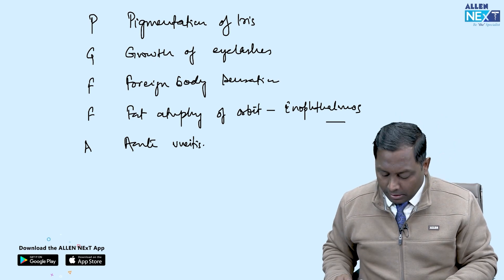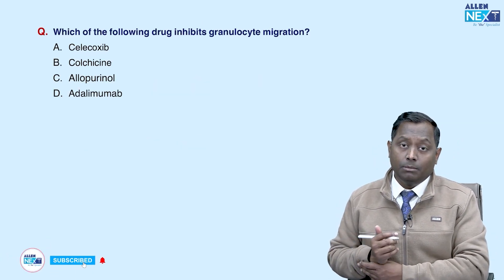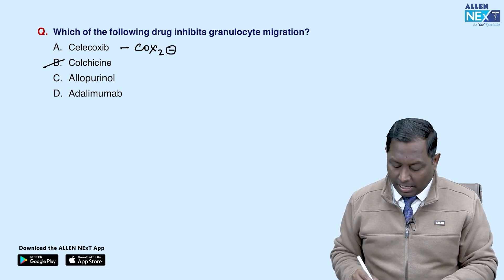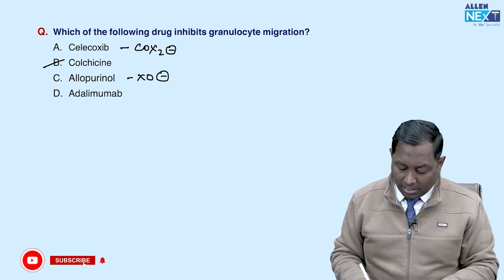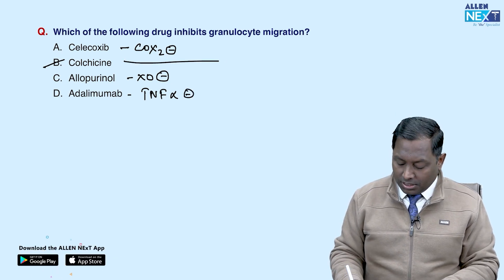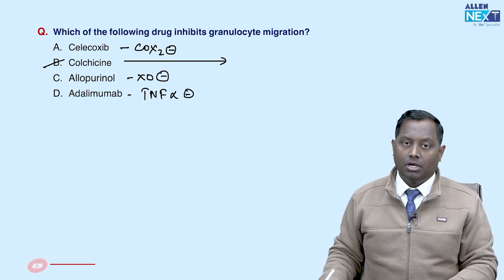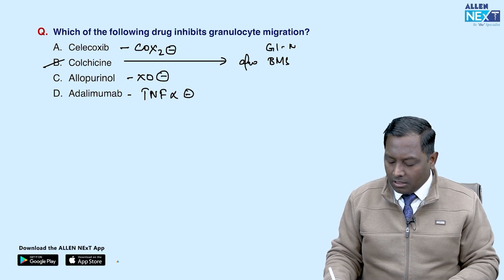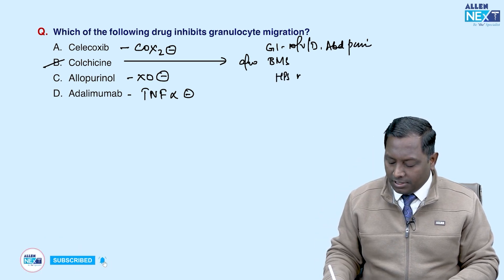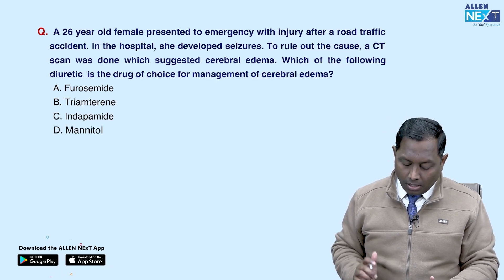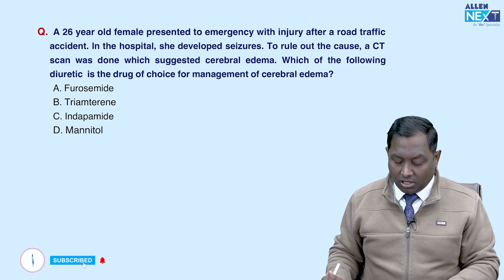Which of the following inhibits granulocyte migration (chemotaxis)? The answer is colchicine. Celecoxib is a selective COX-2 inhibitor, allopurinol is a xanthine oxidase inhibitor, and adalimumab is a TNF-alpha inhibitor. Colchicine inhibits granulocyte migration and is used in acute gout resistant to NSAIDs and steroids. Its side effects include bone marrow suppression, GI effects (nausea, vomiting, diarrhea, abdominal pain), and hypersensitivity reactions. Chemotaxis inhibition is its primary mechanism.